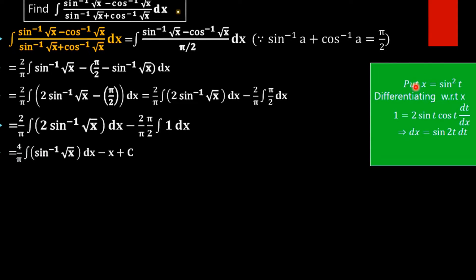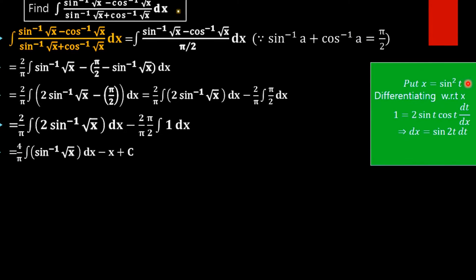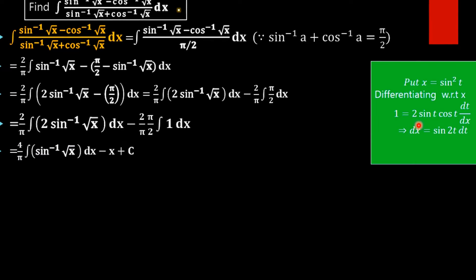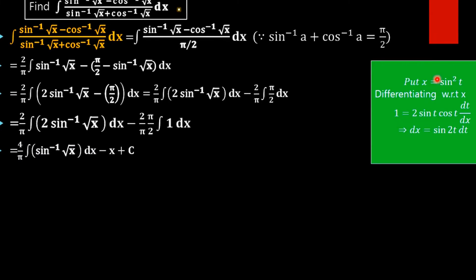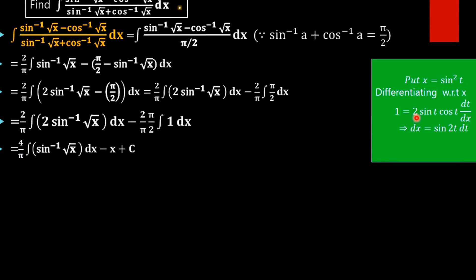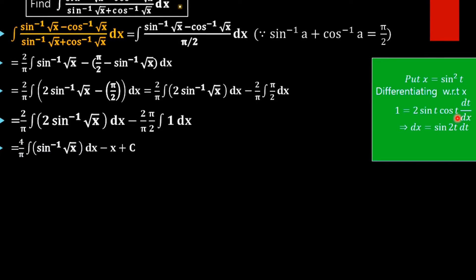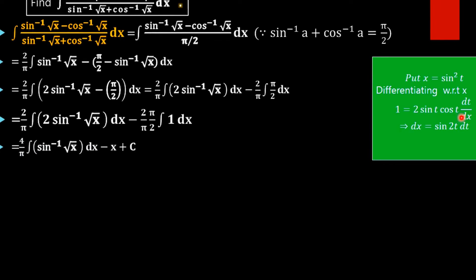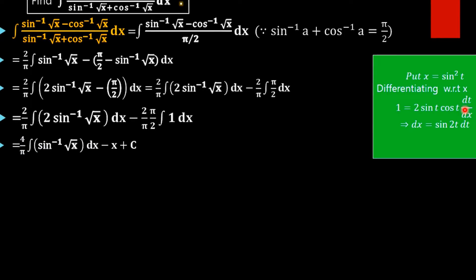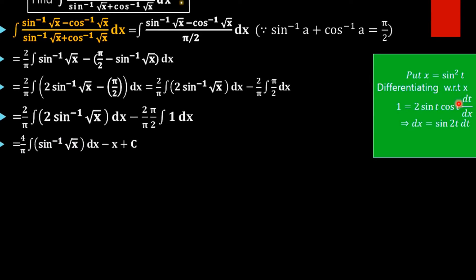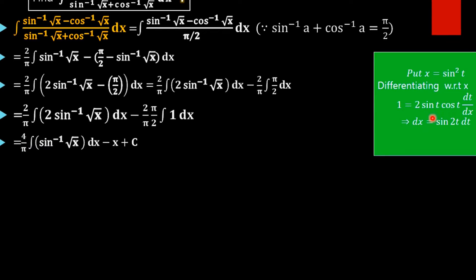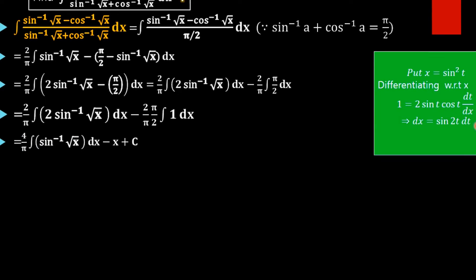On differentiating x equals sin squared t with respect to x, we get 1 equals the derivative of sin squared t, which by the chain rule is 2 sin t times cos t times dt by dx. Therefore dx equals 2 sin t cos t dt, which equals sin 2t dt.